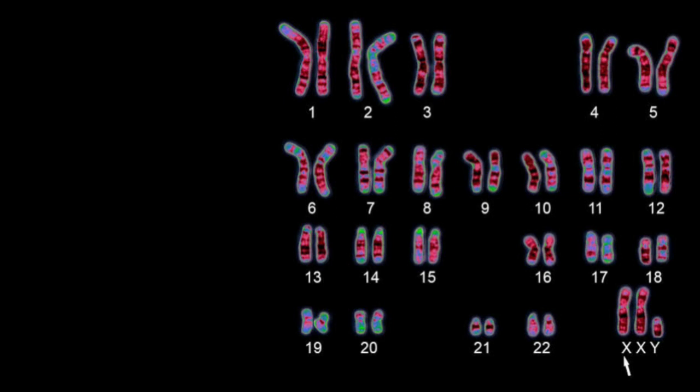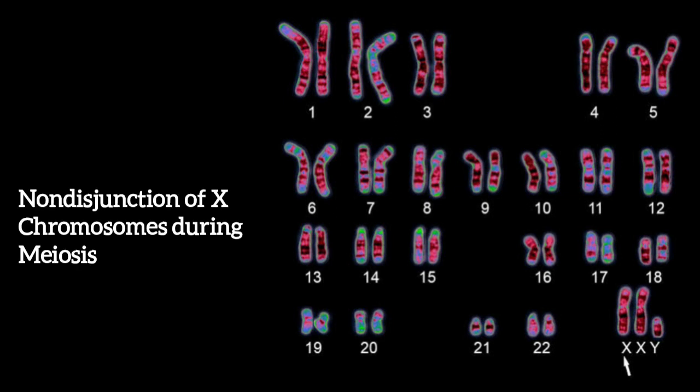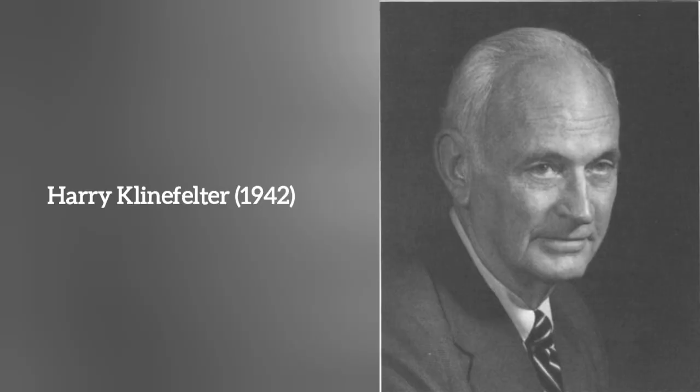The condition results from non-disjunction, where the X chromosomes fail to segregate properly during meiosis. The syndrome was named after American endocrinologist Harry Klinefelter, who first described the disease in 1942. But in 1956, Klinefelter syndrome was found to result from an extra chromosome.